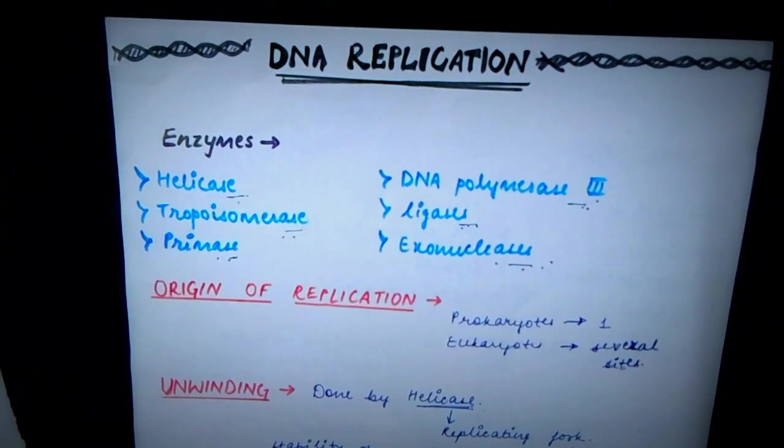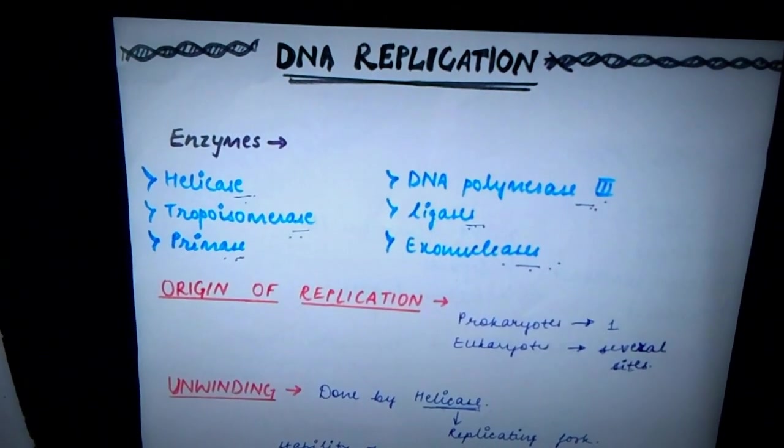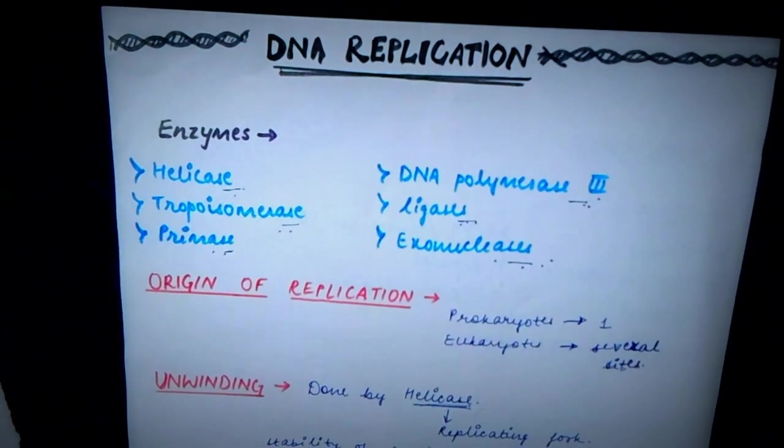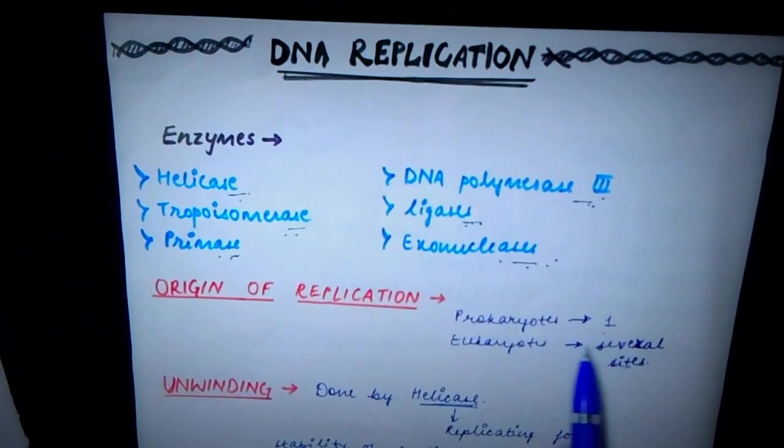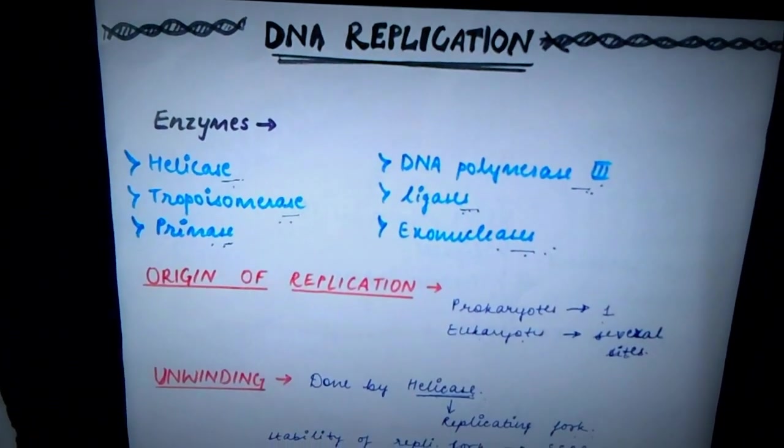So origin of replication. These are the sites where DNA replication occurs. And in prokaryotes, there is just one site where DNA replication can occur. Whereas in eukaryotes, there are several thousands of sites where DNA replication occurs.